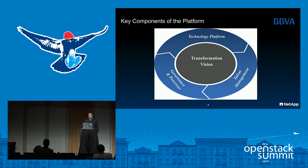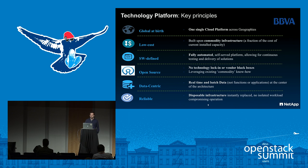As the architecture global department unit, we are in charge of defining, designing, and implementing the future global platform that will support our core banking infrastructure, business units, and platform. Inside that organization, EAS and open systems are in charge of designing and implementing that architecture. We are building a new platform based on these key principles: infrastructure that is global at birth, with low cost, based on commodity infrastructure, software-defined and open source, and also reliable and data-centric. This took us to the use of OpenStack.